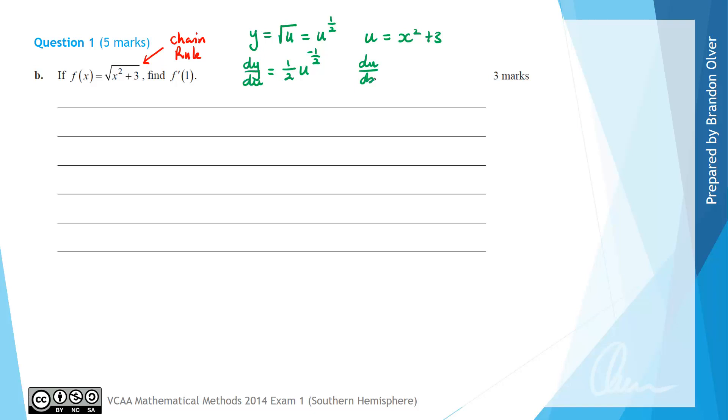and du/dx is going to equal 2x. From the formula sheet we can see that dy/dx, the derivative that we're calculating, is going to be dy/du times du/dx.